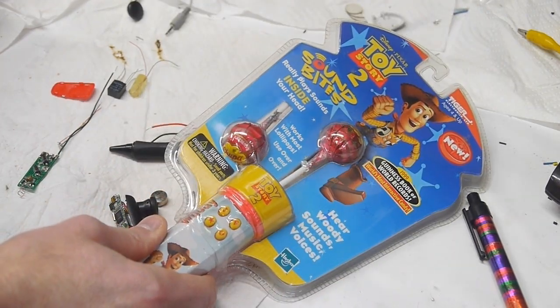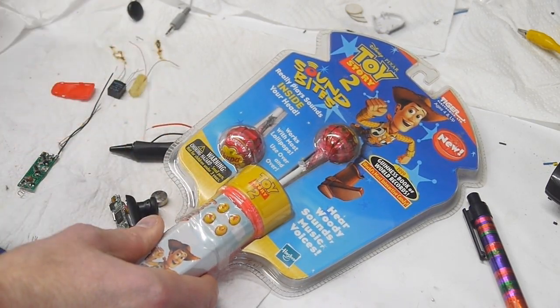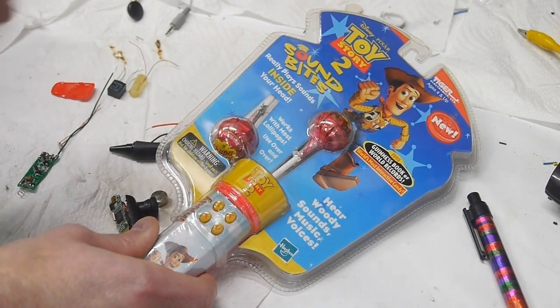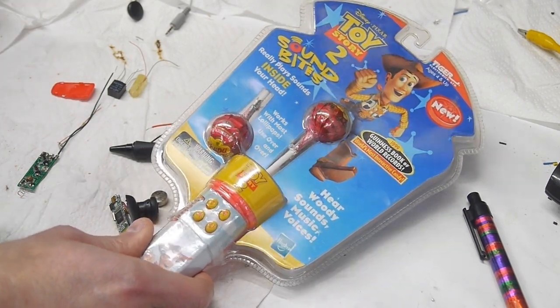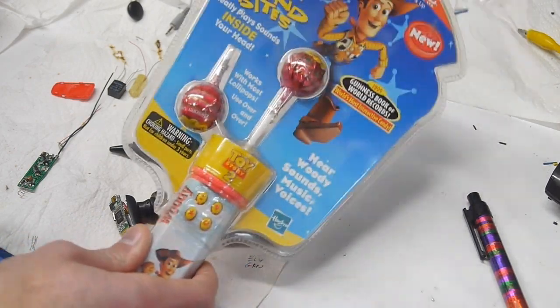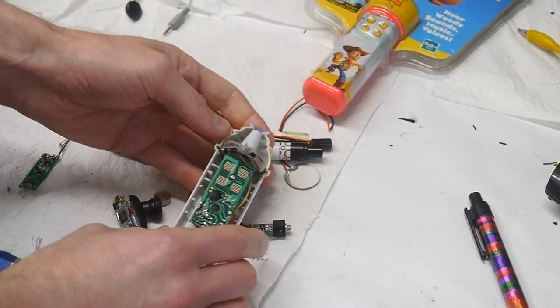When you press one of these buttons it emits a sound effect and if the lollipop is in your mouth or hitting one of your teeth you get this kind of bone conduction effect where it wires the sound right into your ear.